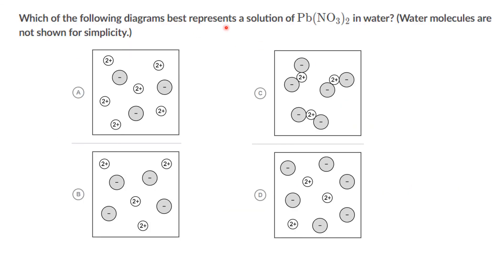The next question: which diagram best represents a solution of Pb(NO3)2 in water, with water molecules not shown? Pb(NO3)2 is an ionic compound that dissociates into Pb²⁺ and NO3⁻ ions. The ratio between lead and NO3⁻ is 1:2, meaning the number of NO3⁻ ions is double that of Pb²⁺ ions. In figure A, there are three NO3⁻ and six Pb²⁺ ions — this is wrong because lead ions should not outnumber NO3⁻.